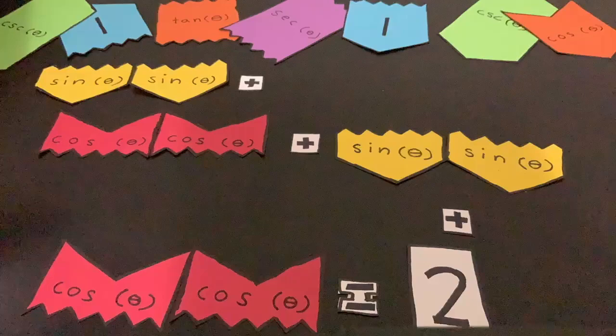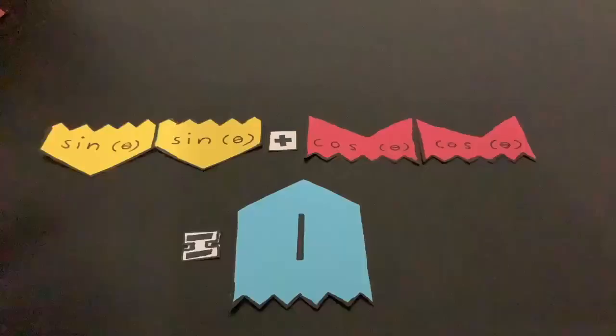Then if we look at our trigonometric identity sheet, we can see that sine theta times sine theta plus cos theta times cos theta is actually equal to 1.